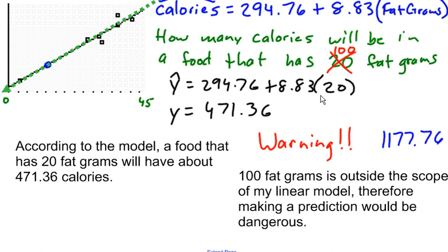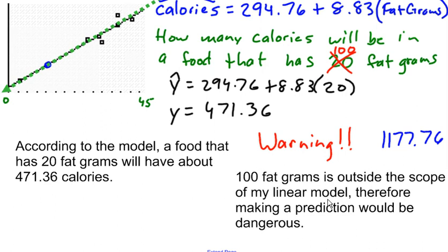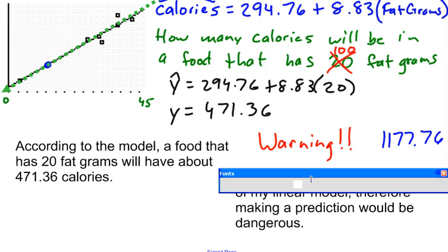But I don't really want to type this up without making this statement. 100 fat grams is outside the scope of my linear model. Therefore, making a prediction would be dangerous. After saying this, if I wanted to go on and say, according to the model, a food that has 100 fat grams will have about 1,177.76 calories, I would be okay. But this right here.